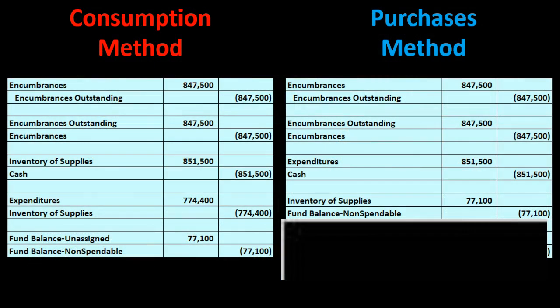Here is our side-by-side example. We'll go through the problem and note similarities and differences as we record transactions — the consumption method on the left, the purchases method on the right. The first transaction is sending out the purchase order. Since we haven't received the inventory or paid cash, normal accrual accounting records nothing. However, in governmental fund accounting we record into a holding account called encumbrances, with the other side going to the fund balance equity account called encumbrances outstanding. This entry is the same under both methods.